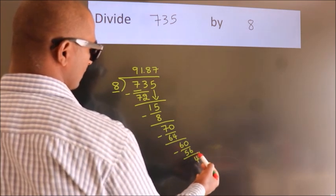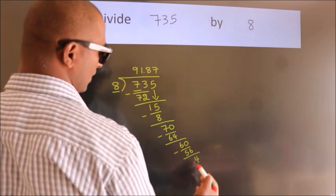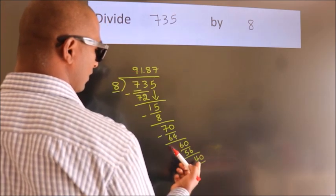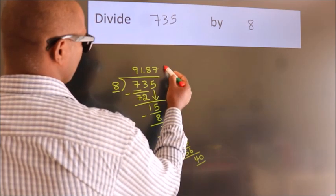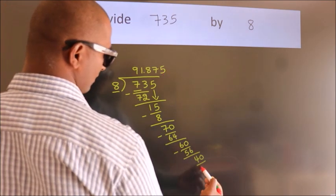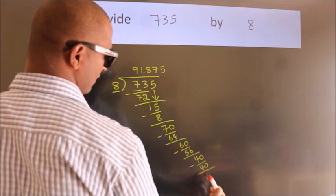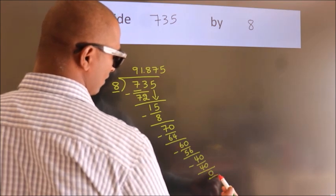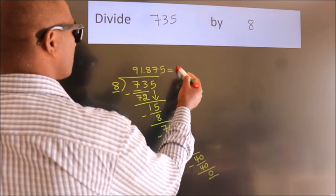After this, we already have the decimal. So directly take 0. So 40. In 8 table, 8 fives 40. Now we subtract, we get 0. Here we got remainder 0. So this is our quotient.